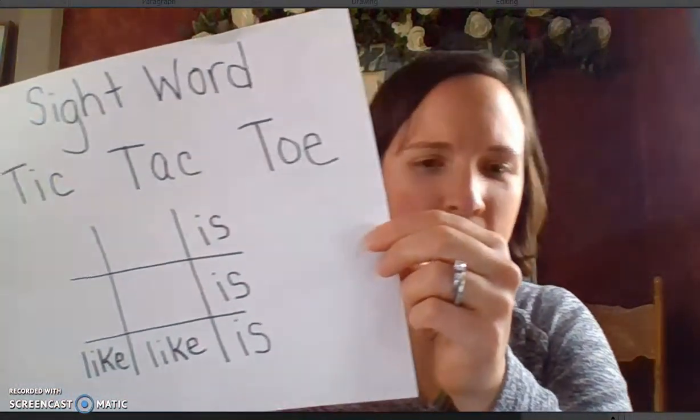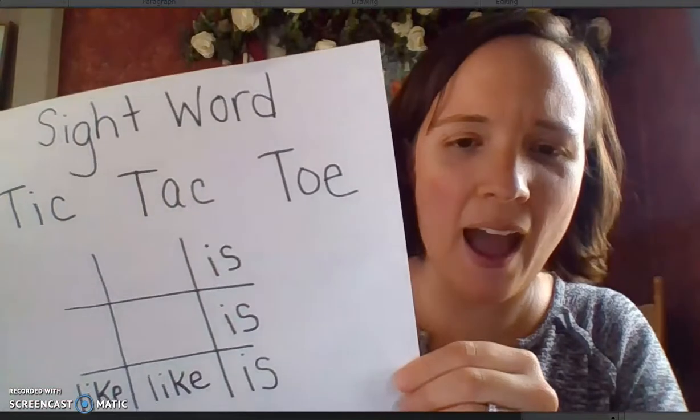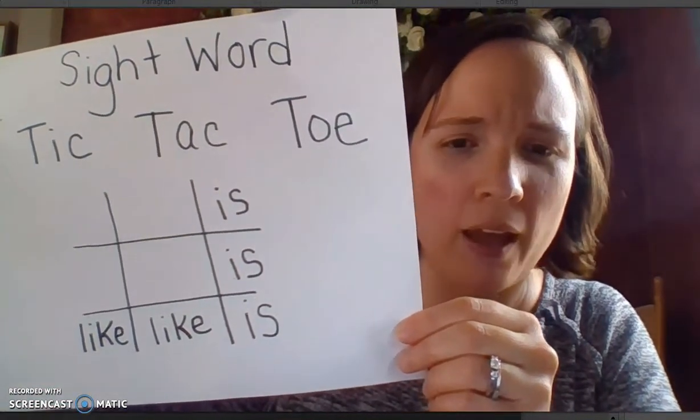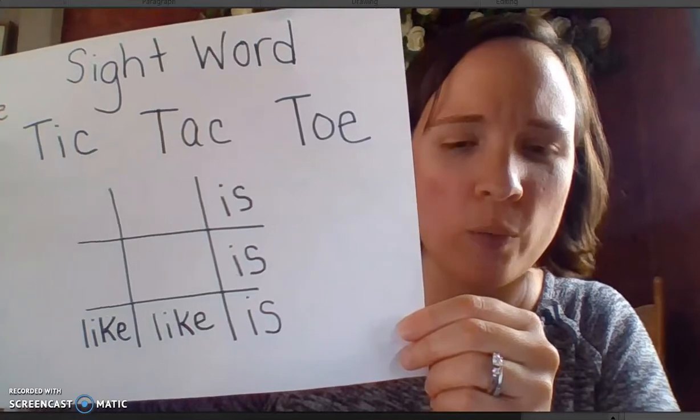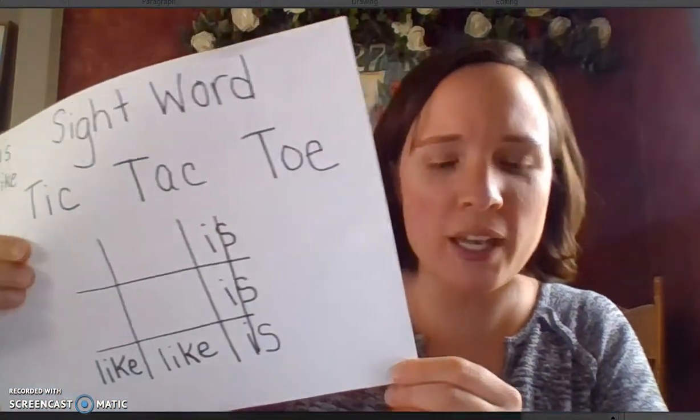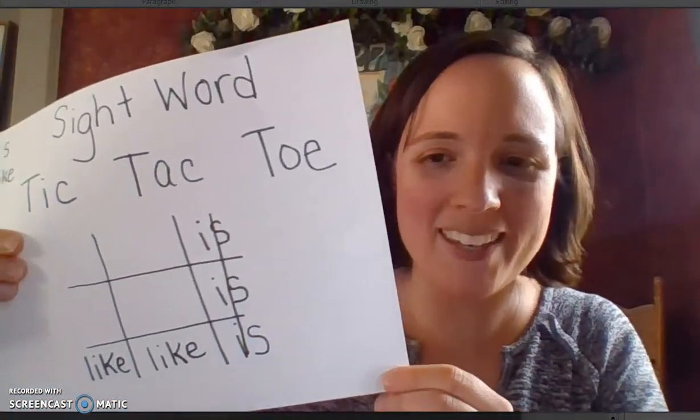I played my word and it looks like I got three in a row. I'm going to draw a line to show that I got three words in a row. Whoever gets three in a row first wins. Playing sight word tic-tac-toe can help you write and learn how to identify sight words.